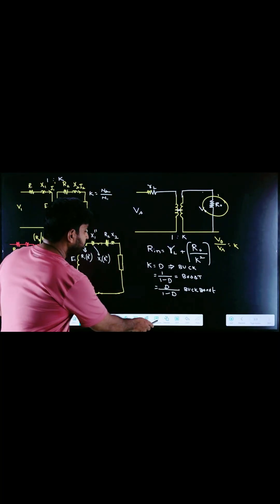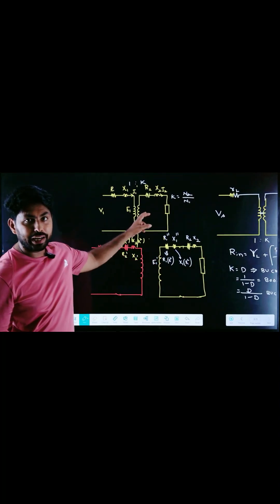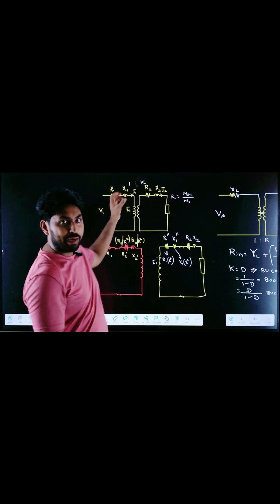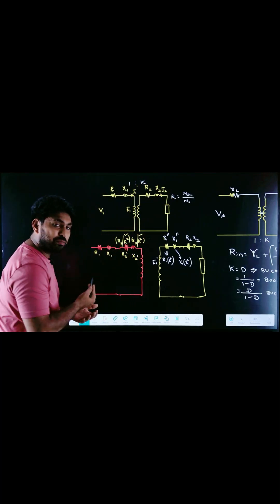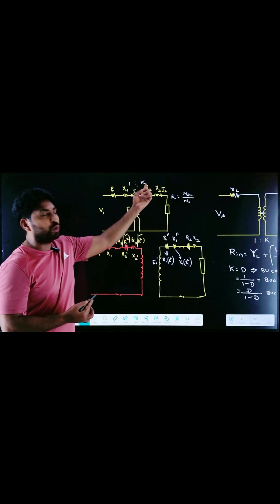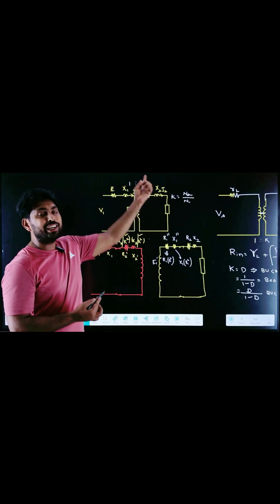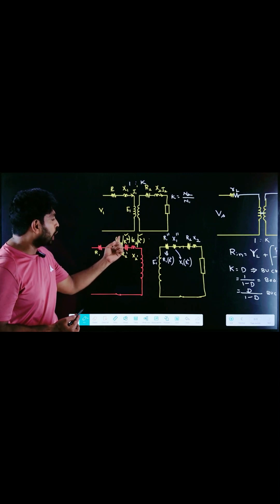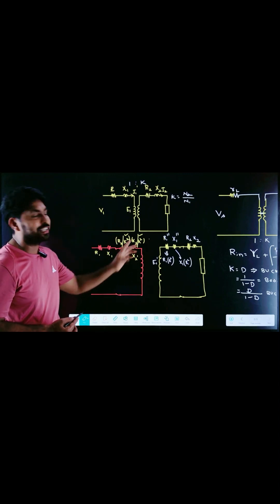If you take the transformer, this is the basic equivalent circuit of the transformer. If I want to move the secondary parameters to the primary, I need to divide by k². So if I want to move R2 from the secondary to the primary side, I need to divide it by k² — that is R2/k² and X2/k².